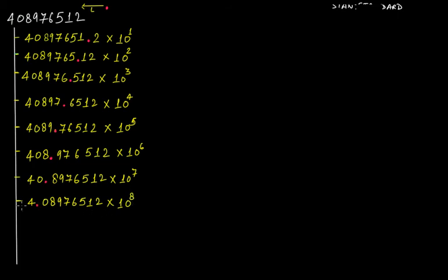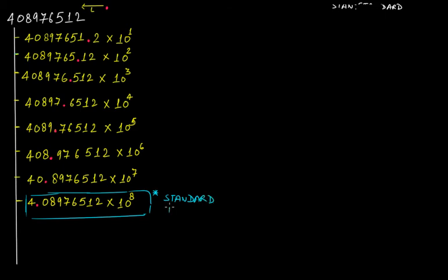This representation — 4.08976512 times 10 to the eighth power — is a special one. This is the standard form representation. Among all the representations we have for this number, in this particular expression the decimal point is just after the first digit. Therefore, this is the standard form. In the standard form, your decimal point should always be after the first digit.